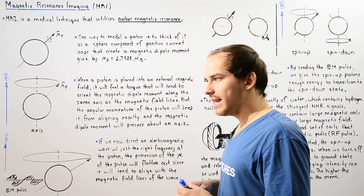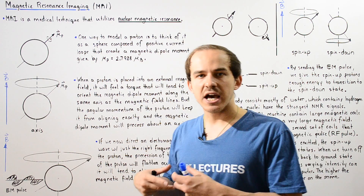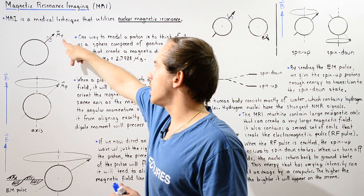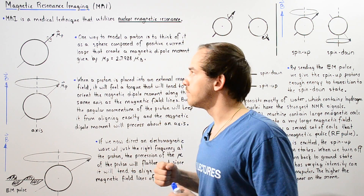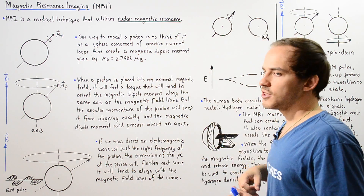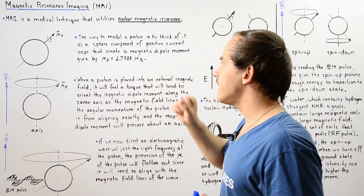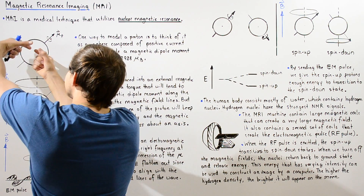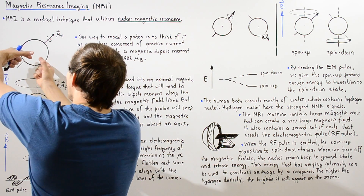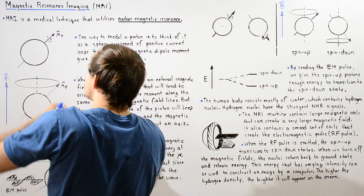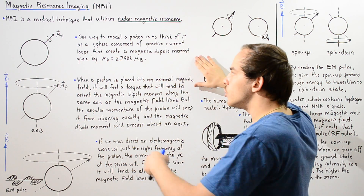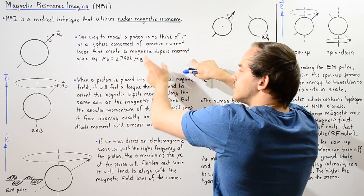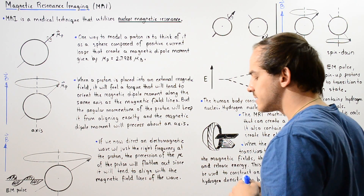Recall that any proton has positive charge, and that positive charge spins, creating a magnetic dipole moment for that proton. One way to model a proton is to think of it as a sphere composed of many positive electric current loops stacked on top of one another. Combining all the magnetic dipole moments of these current loops gives us the magnetic dipole moment for our proton, given by an equation where mu_B is a constant known as the Bohr magneton.